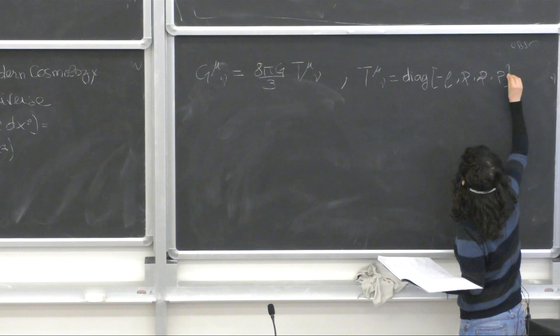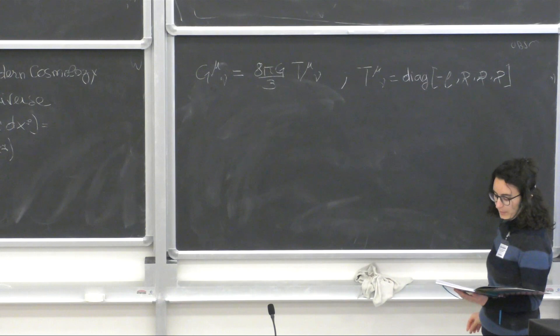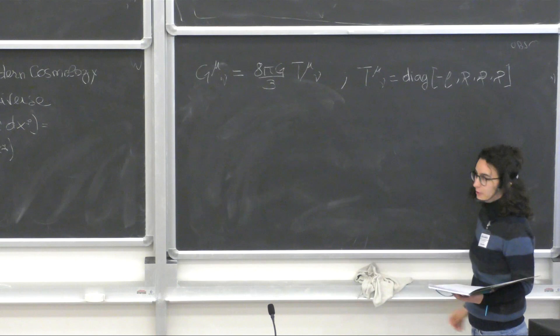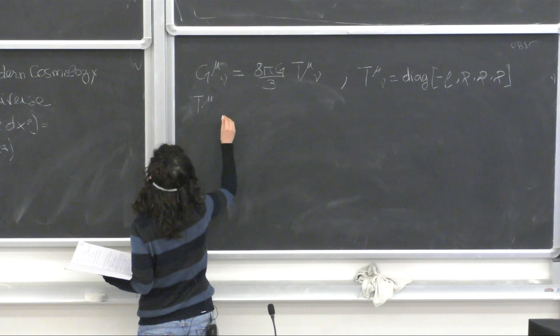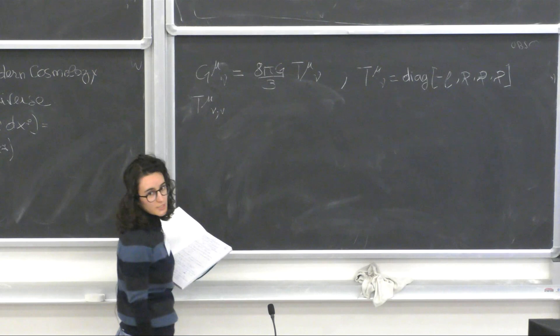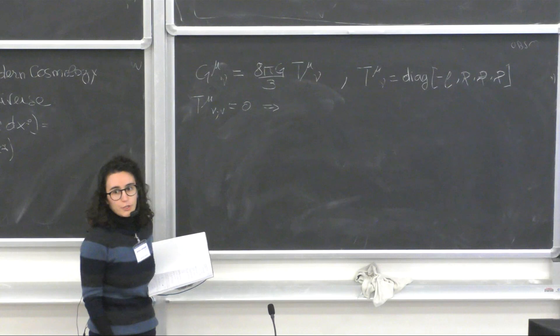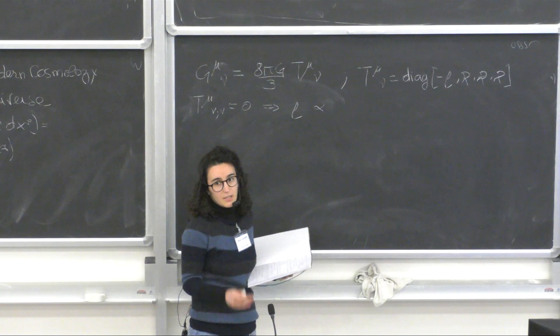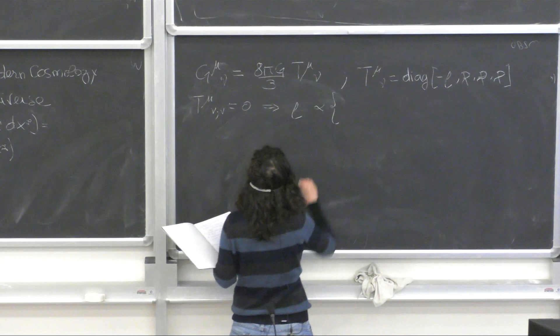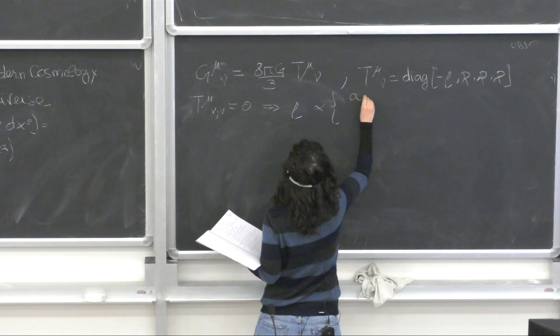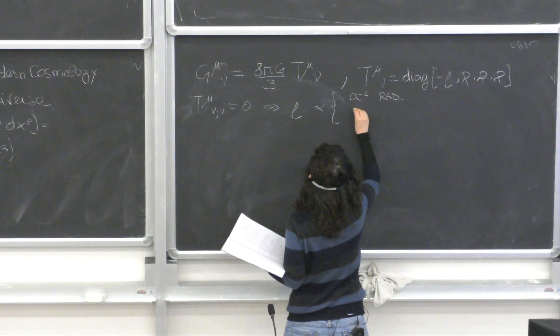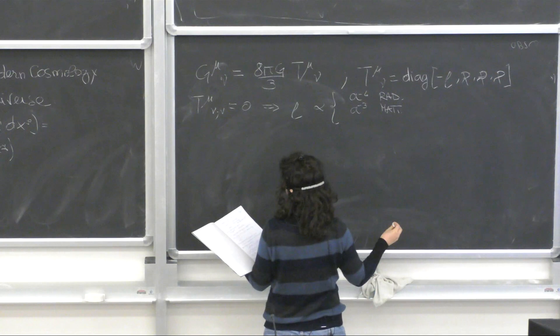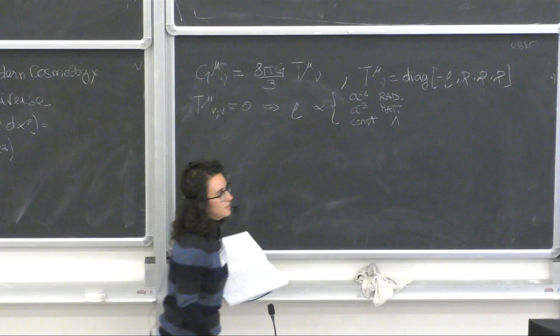This p should not be mistaken for the p I used for momentum. From the stress-energy tensor and in particular from the property of a conserved stress-energy tensor, we can derive the expression for the evolution of the energy density in different epochs of the universe. We have the well-known result that the energy density scales as a⁻⁴ for radiation, a⁻³ for matter, and is constant for the cosmological constant.